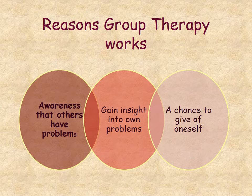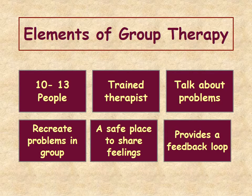In terms of group therapy elements, the ideal number of participants is 10 to 13 people. Fewer than 10 makes it difficult to get interaction going, and more than 13 becomes unwieldy with too many people talking at once. It's most helpful to have a trained therapist — running a group takes a lot of talent. Some highly educated people are the worst group therapists. You need someone who can facilitate interaction, help people talk to each other, and get beyond surface-level discussion.